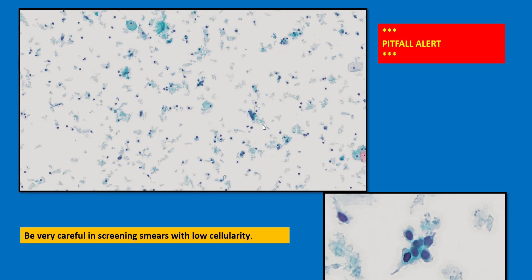One more thing to remember: sometimes a smear can show very poor cellularity — just a few squamous cells here and there. In these cases, you have to be extremely careful in screening the slide properly. For example, in this case there are very few squamous cells — looks like an unsatisfactory smear — but in the middle of the field there is a little cluster of four or five cells, and these are malignant cells, from a case of squamous cell carcinoma with significant background diathesis. If you see a smear which looks inadequate, do not be in a hurry to remove it from the microscope stage. Screen that smear very carefully because these are the smears where there could be malignant cells, and you will make a very big mistake if you miss them.